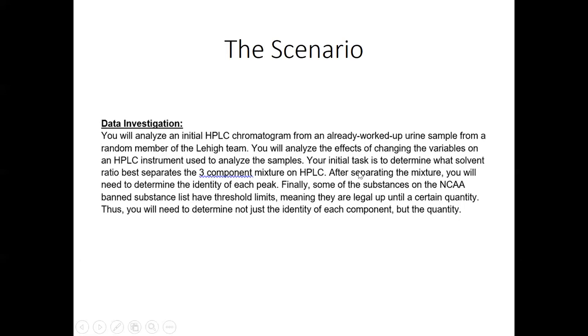And once you separate the mixture, once you can actually see three distinct peaks, you'll be able to determine the identity of each peak based on mass spec. And then finally, some of the substances on the NCAA banned substance list have threshold limits, meaning they are legal up until a certain quantity. So you need to determine not just the identity of each component, but the actual quantity.